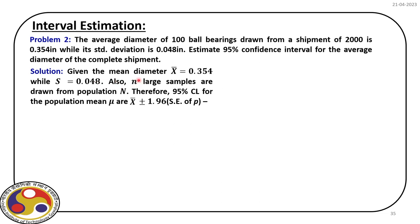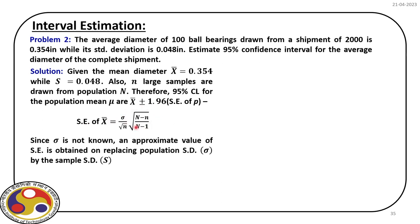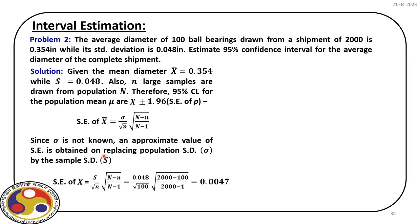We have drawn n samples from a population of capital N. Therefore, the 95% confidence limit for the population mean μ is the sample mean ± 1.96 times the standard error of p. We calculate the standard error on the sample mean, but since we are estimating for the complete shipment using a finite population expression, and since σ (the population standard deviation) is not known, we use the sample standard deviation S as an approximation. The standard error of the mean turns out to be 0.0047.